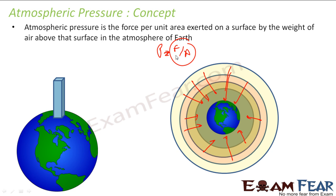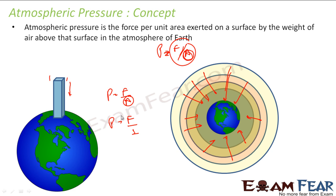To make things simple, we take one square meter of area. If you take one square meter of area on earth's surface, the force exerted in that area is nothing but my pressure, because the denominator becomes one. Pressure is force by area, so if area is one, pressure equals force. In that one-meter-square area, we find the force exerted and that becomes my pressure.